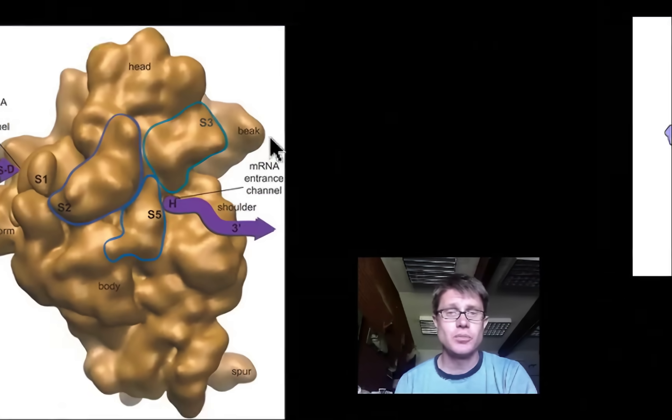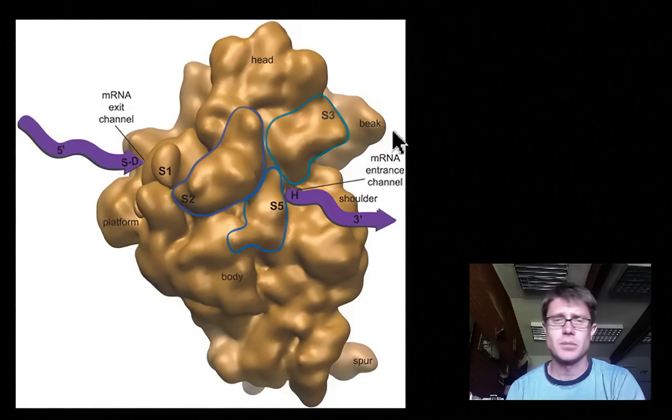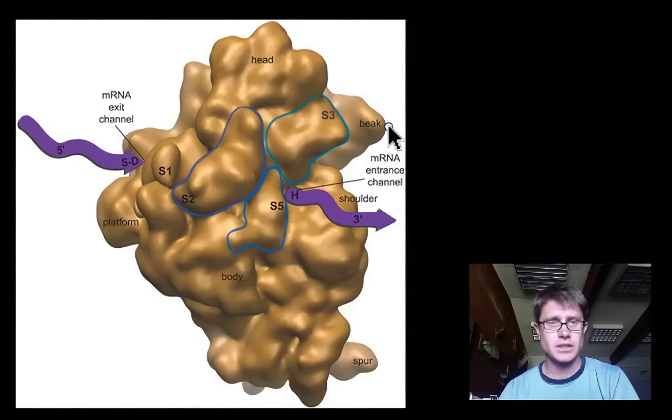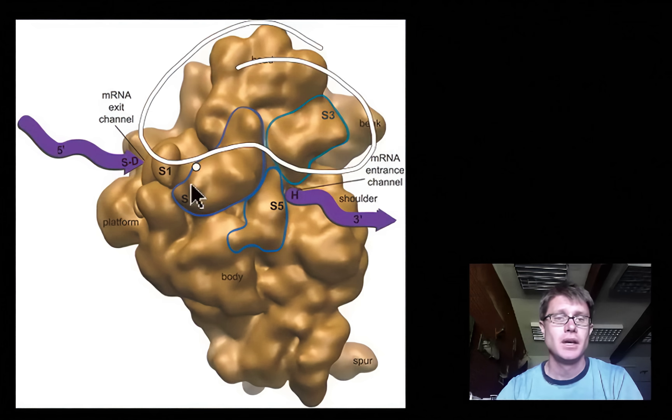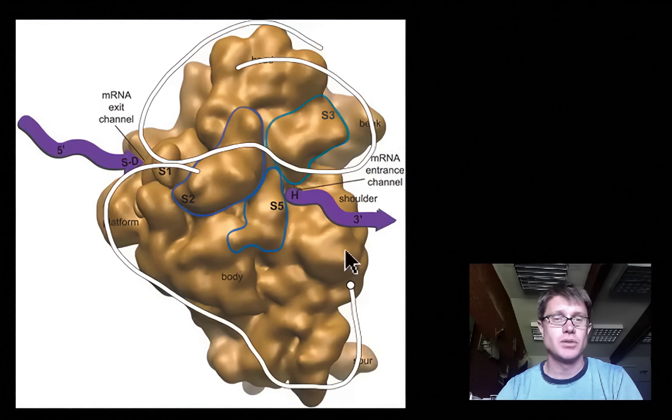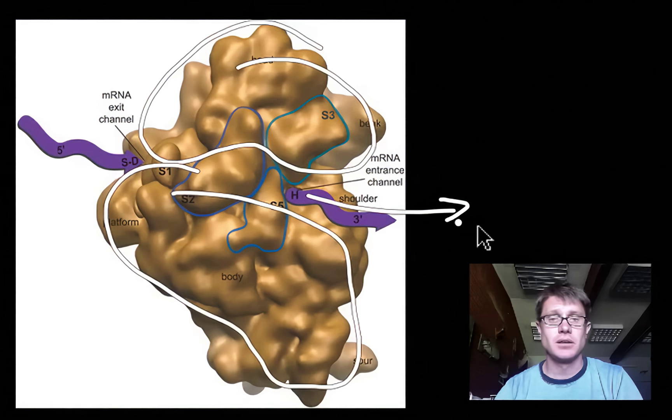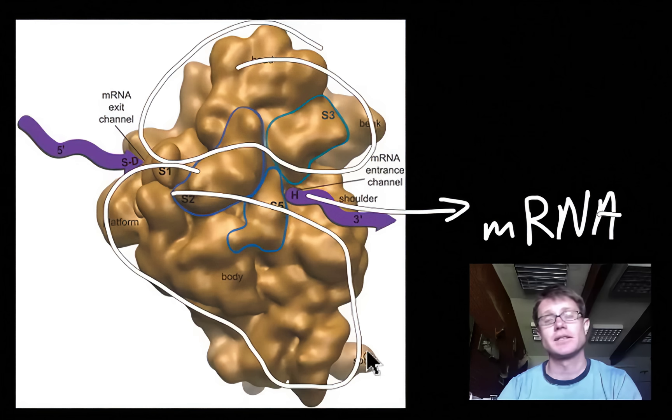Those two parts together are synthesized in the nucleolus which is going to be found in the nucleus. What you essentially get are two subunits: a small subunit and a large subunit. Then what goes through the middle is going to be messenger RNA. So what are we doing here? We're doing translation, translating the message of the messenger RNA to a protein. Where does this take place? It could take place right in the cytoplasm or it could take place on the ER.